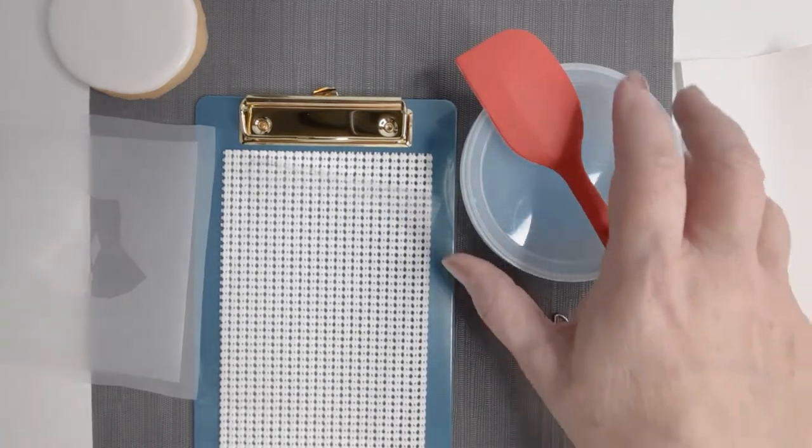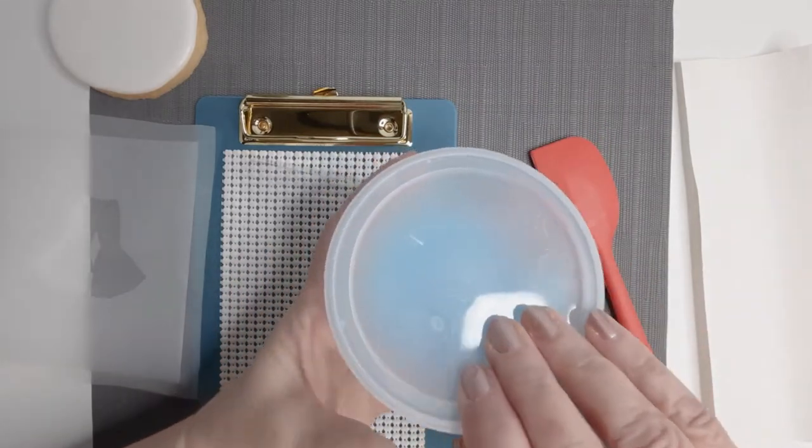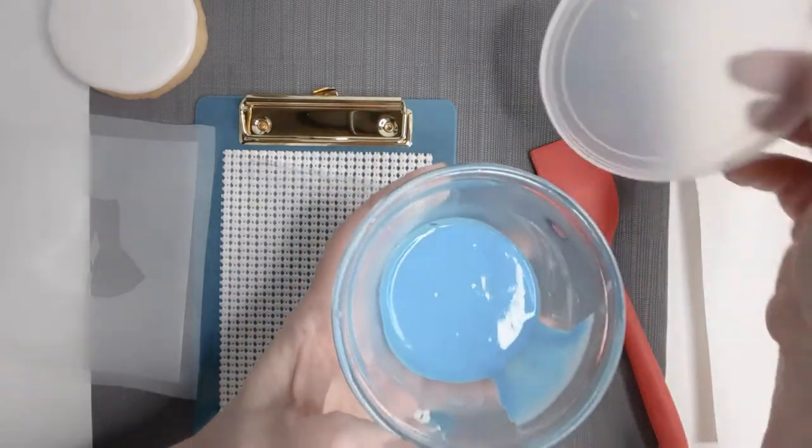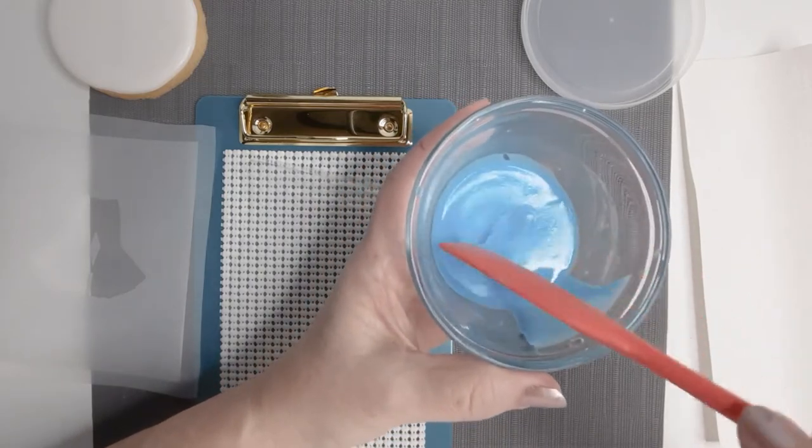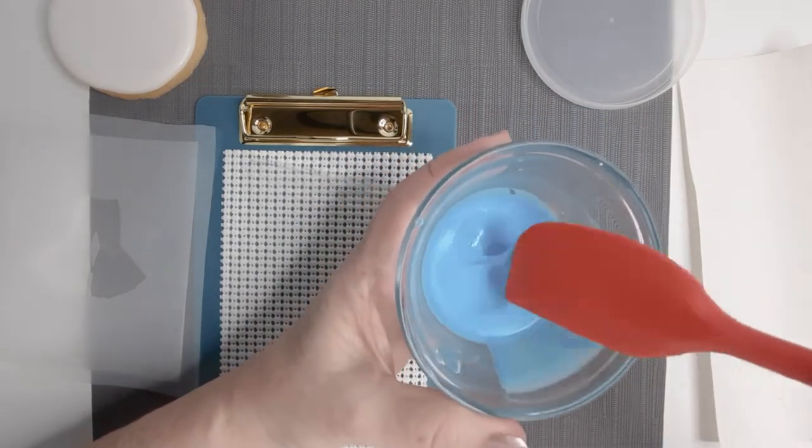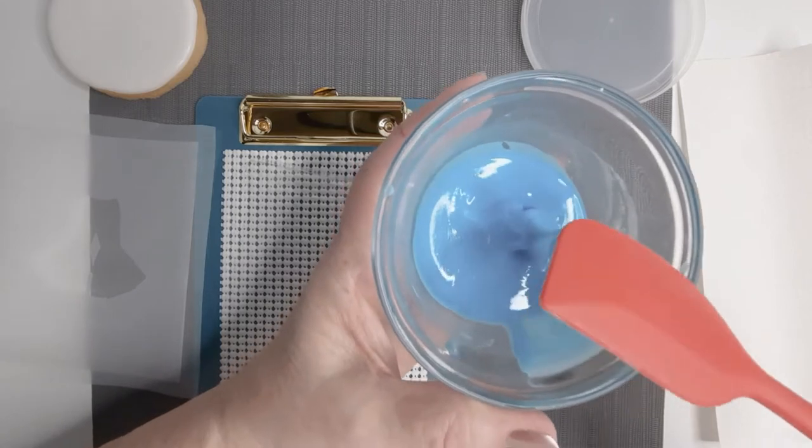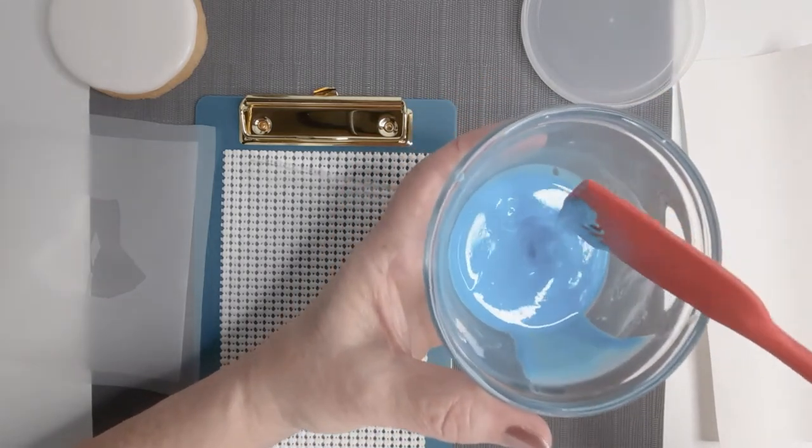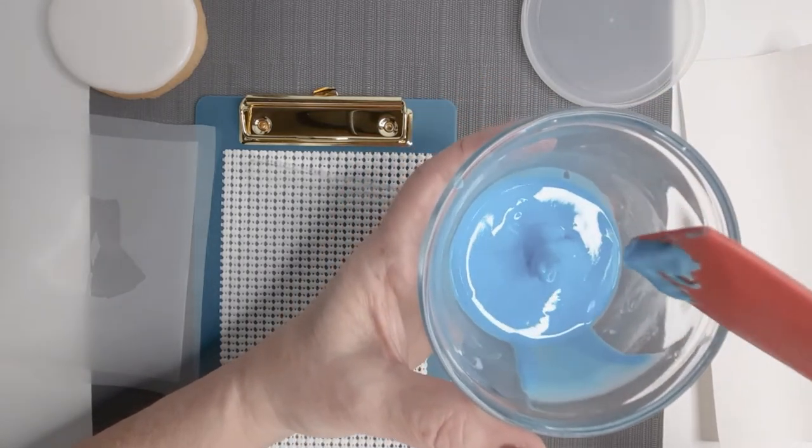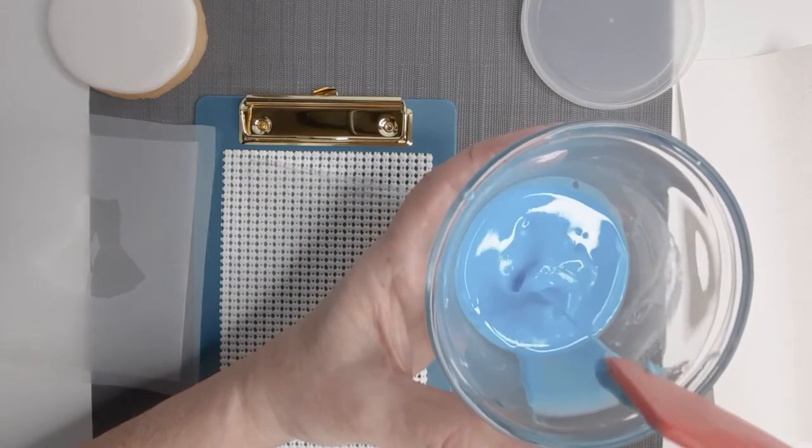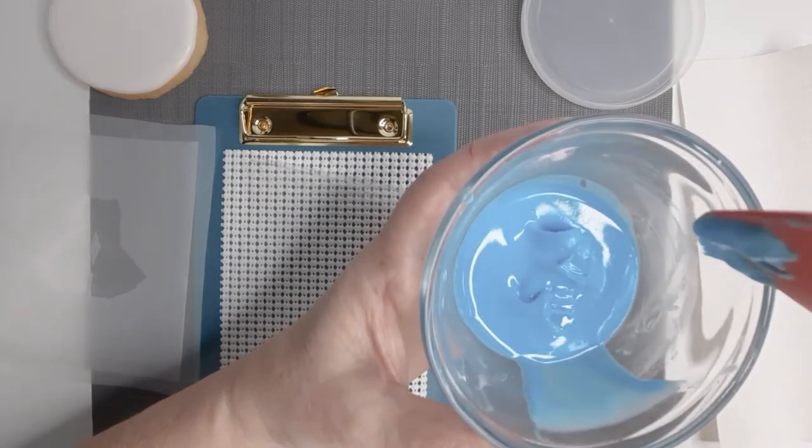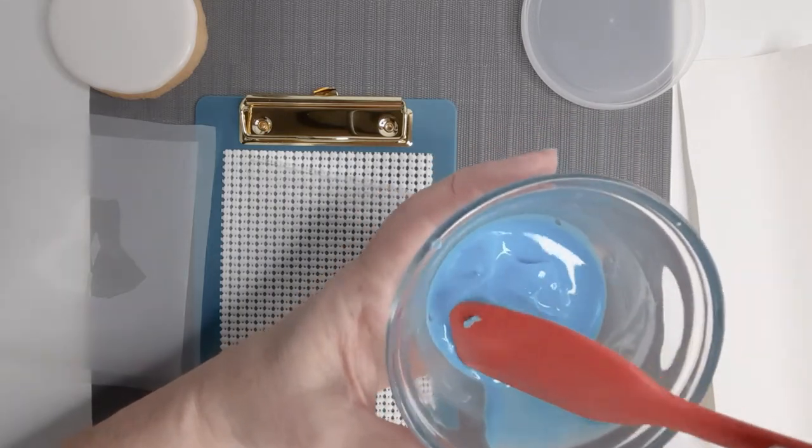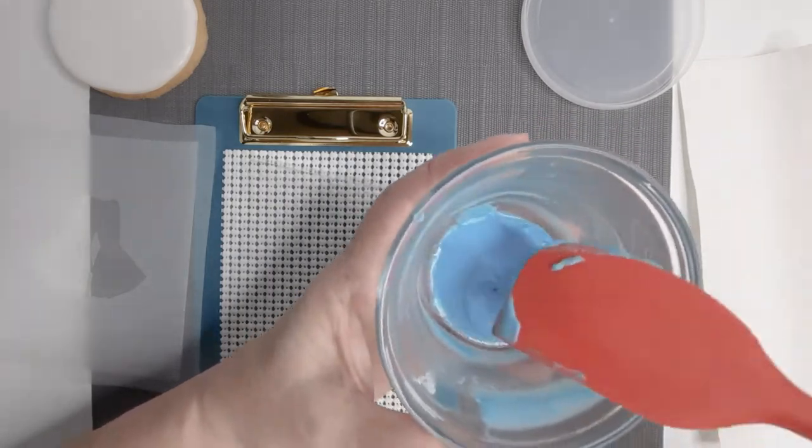So first of all, you want to have your royal icing at about a 10 second consistency to where if you put your spatula in and pull it up, you're getting a little curl there that wants to fold down. See that? So when you do that, you know that that's the right consistency.